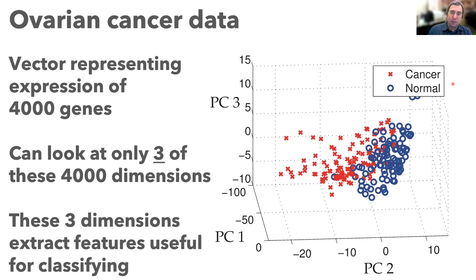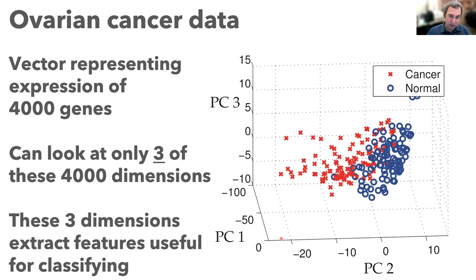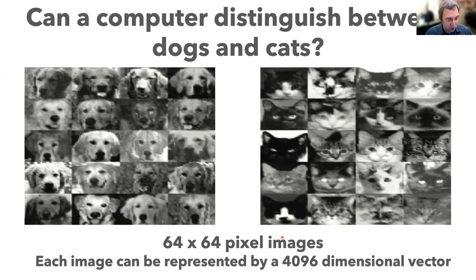This relates to a question in medical data analytics: could you do a gene test and tell someone that a certain group of genes is expressing, and therefore cancer is present? The features are labeled PC1, PC2, PC3 — principal components. We have 4,000 dimensions and can't plot them all, but these three components seem to extract the important features useful for classification. This is done using a computational approach called principal component analysis.